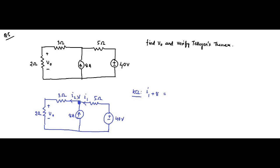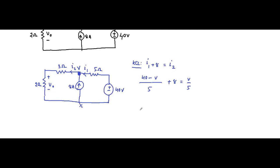I1 is moving towards the node, and 8 ampere is also flowing towards the node, so I1 plus 8 equals I2, which is flowing away from the node. Expressing in terms of voltage and resistance: I1 = (40 − V)/5, and I2 = V/(3 + 2) = V/5.